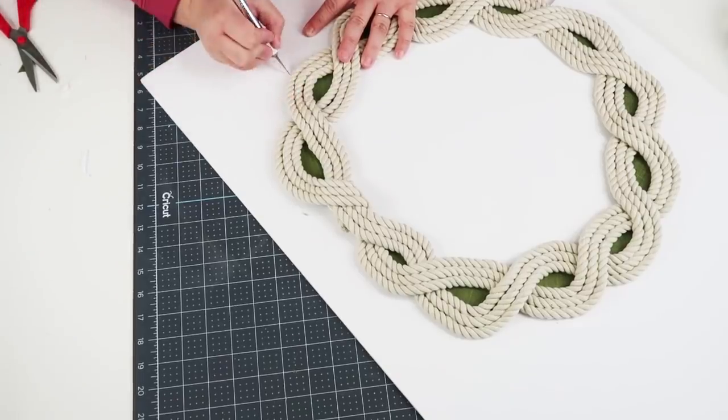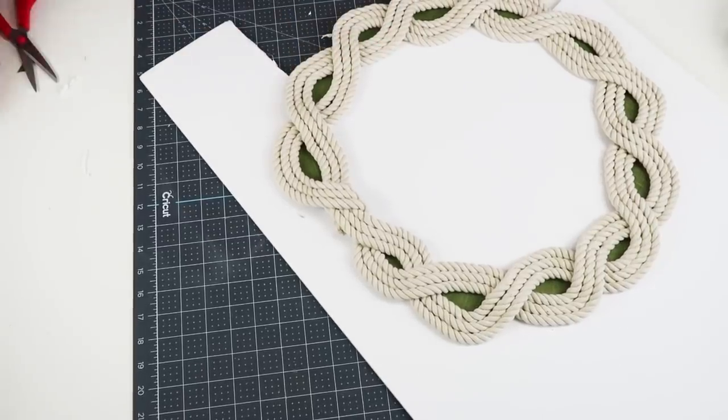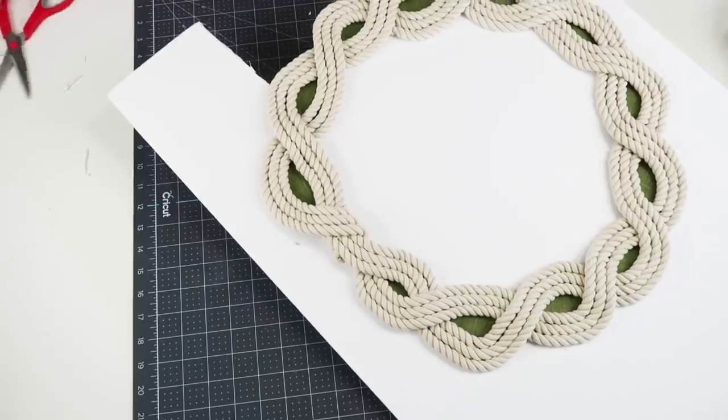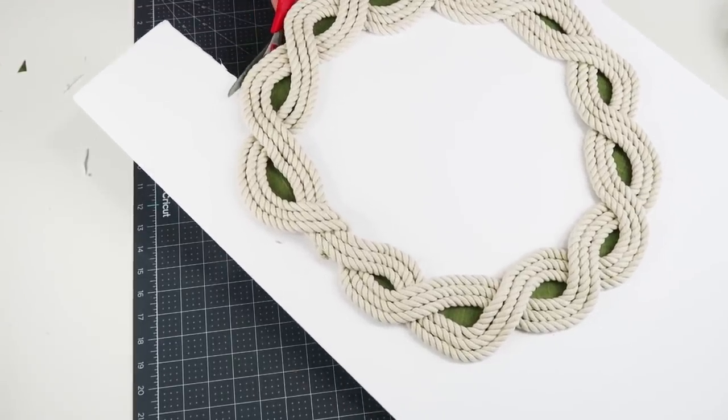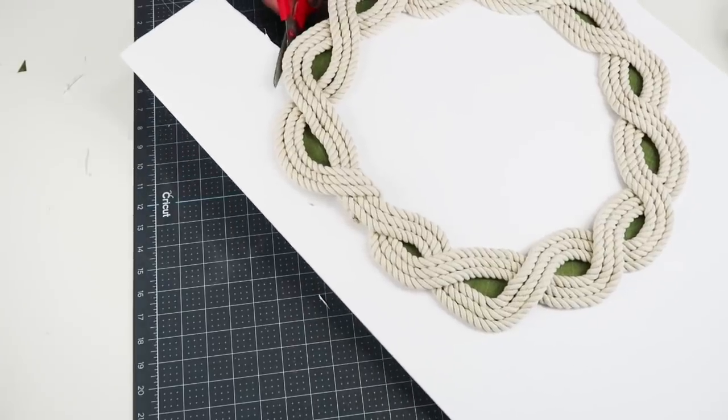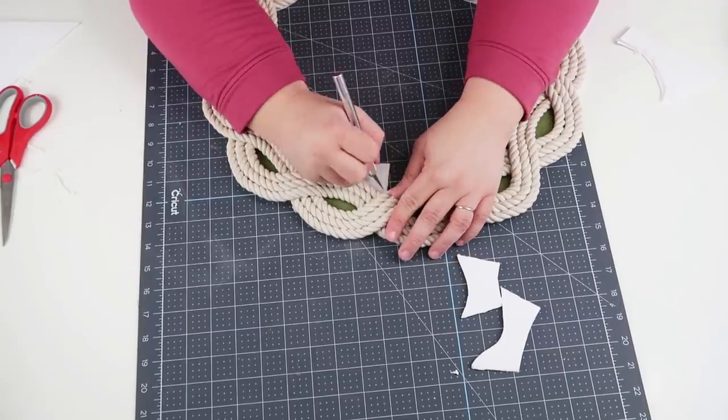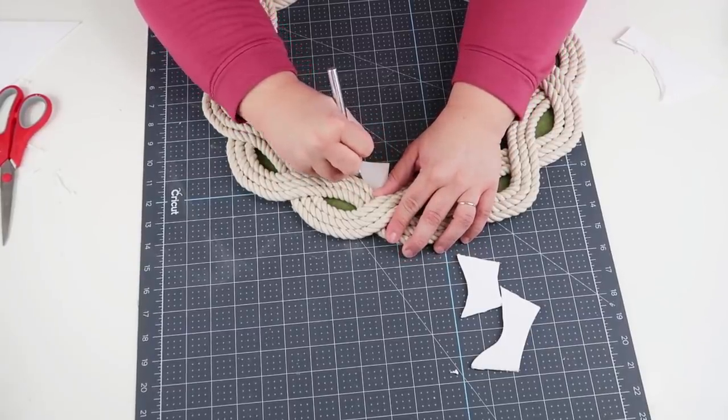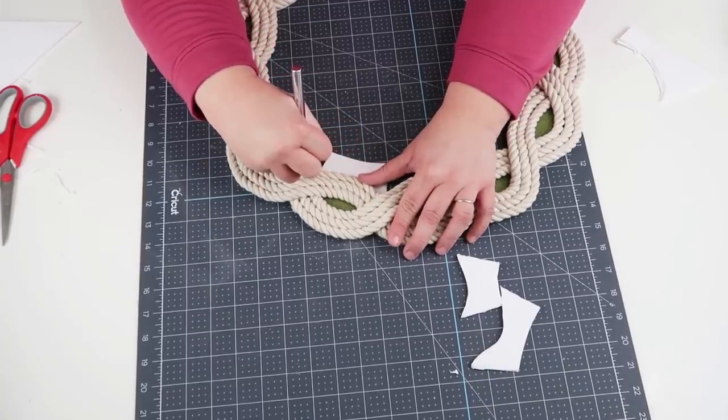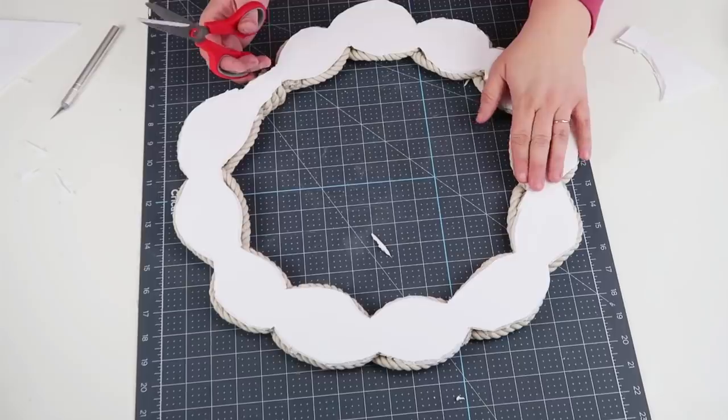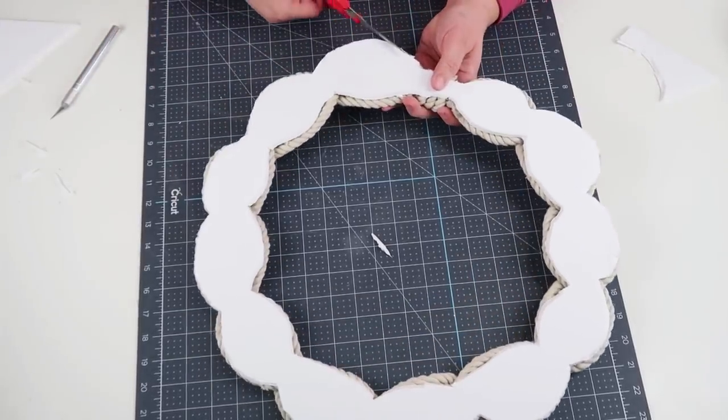I'm going to use my exacto knife and cut it out with my scissors. I just went back and forth between the two of them in all the tricky places. Be careful not to cut your rope because this rope will want to fray and come apart, so just take your time on this part and get it nice and clean where you don't see the foam core coming out on the side. When you flip it over, this is what it should look like. It almost reminded me of those baby teething rings because it was exactly that shape.